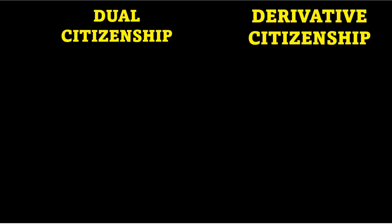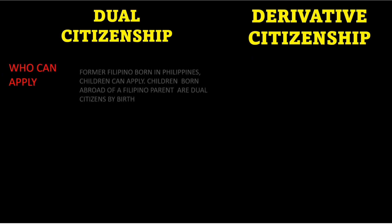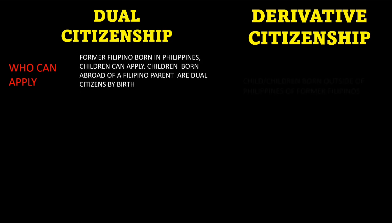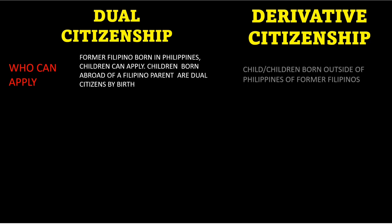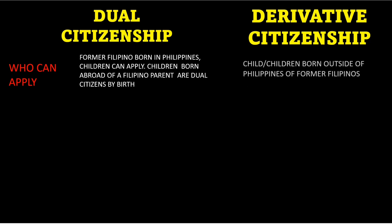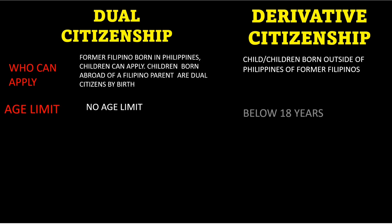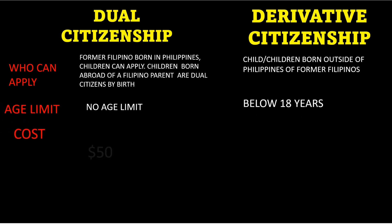Here are the main differences. Who can apply? For dual citizenship: former Filipinos born in the Philippines, and also children born abroad of a Filipino parent are dual citizens. For derivative: only children born outside the Philippines of former Filipinos. What is the age limit? For dual, there is no age limit. For derivative, children must be below 18 years of age. What is the cost? $50 for dual citizenship, while $25 for derivative.